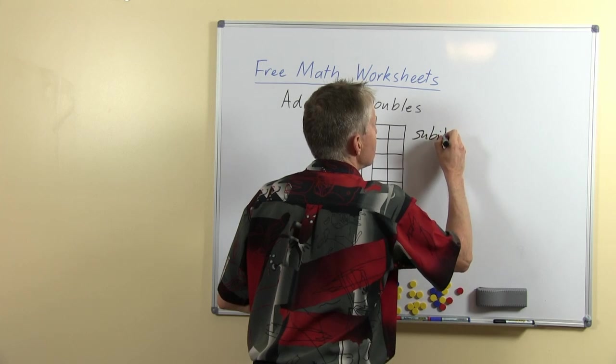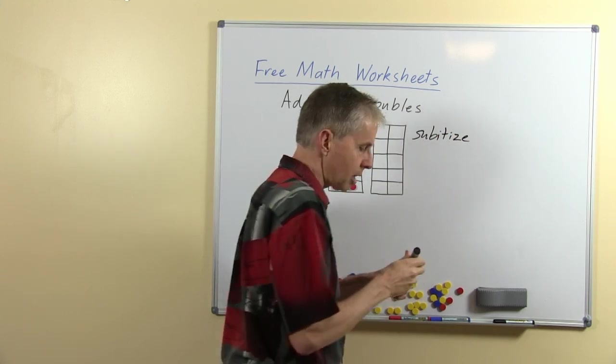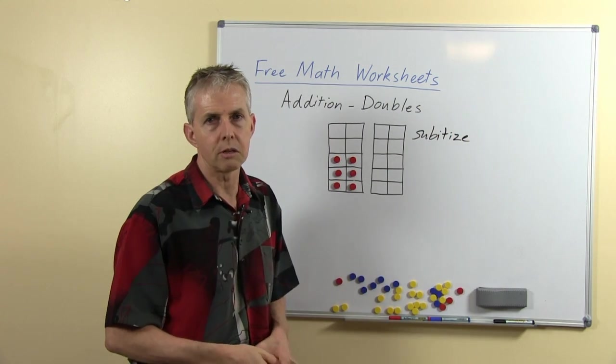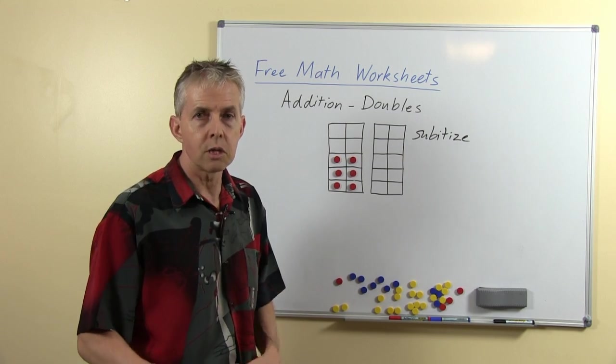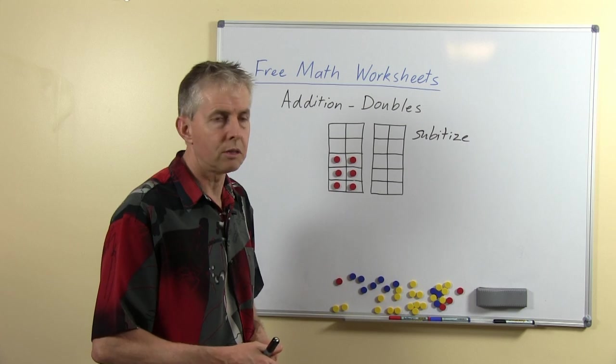Now the process that we want the students to use, that they'll naturally use, is subitization, which means to be able to see how many are in a group without actually counting them. In other words, recognize the number that's in the group.